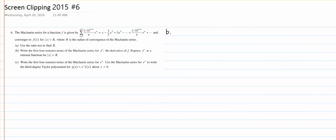b, write the first 4 non-zero terms of the McLaren series for f prime, the derivative of x. Express f prime as a rational function for absolute value of x is smaller than r. So the first 4 terms of the McLaren series are 1 plus x plus x squared over 2 factorial plus x cubed over 3 factorial. Wait, no, that's not true. The real for non-zero terms are,